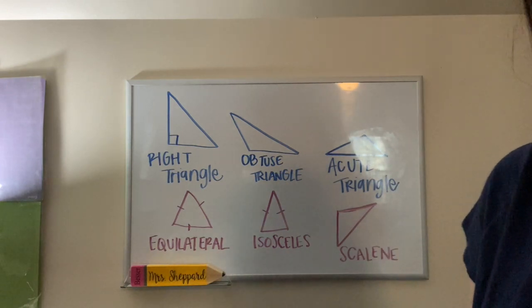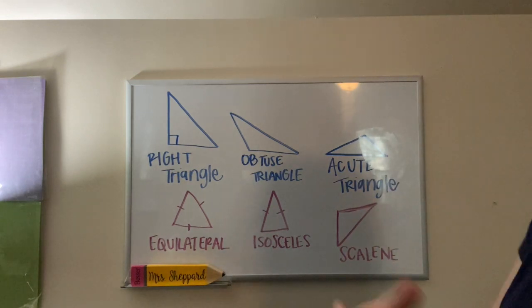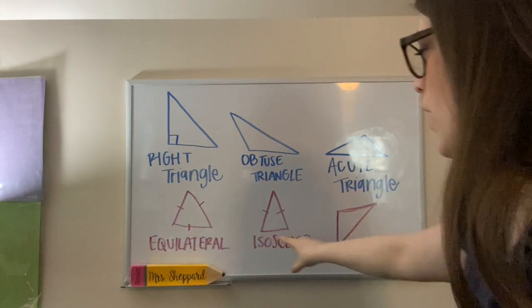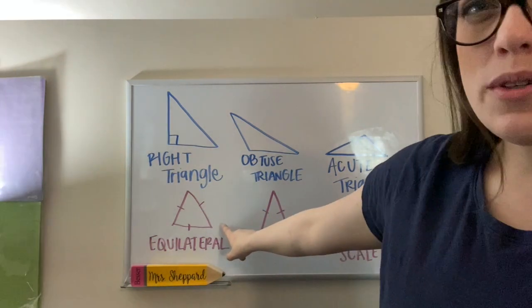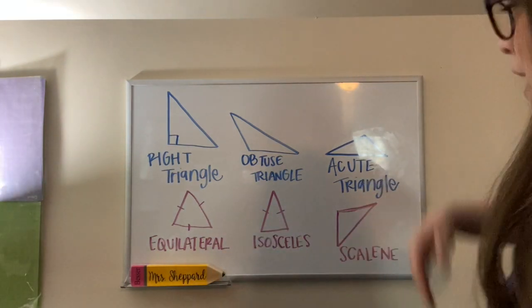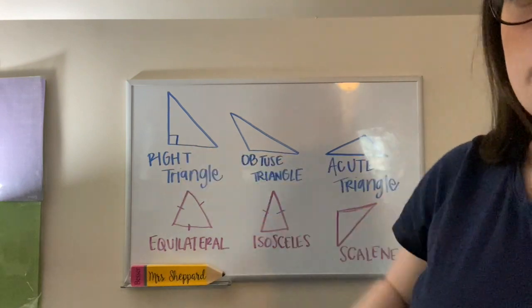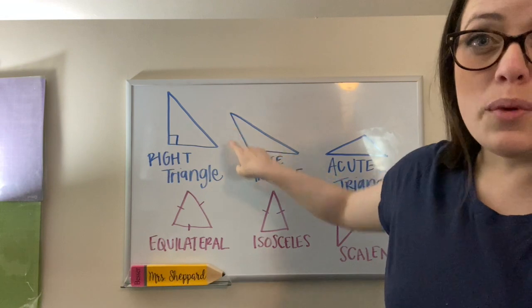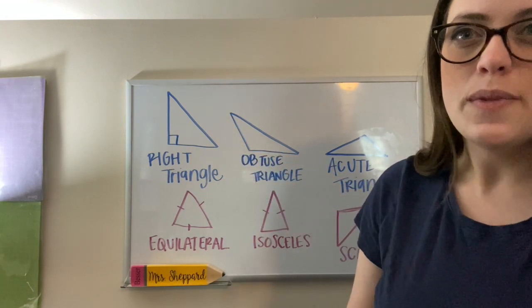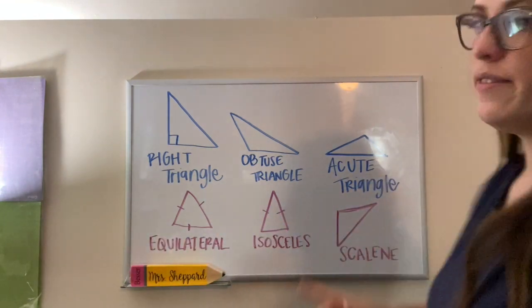Now, every triangle can be classified as one of the blue ones and one of the purple ones. So for example, we can have an equilateral triangle that's also an acute triangle. We can have an isosceles triangle that's also a right triangle. But we cannot have a triangle that is two of the blue ones or two of the purple ones. Every triangle is one of these and one of these.